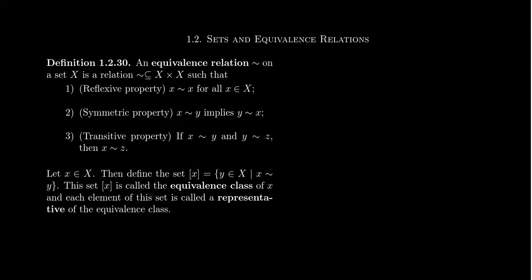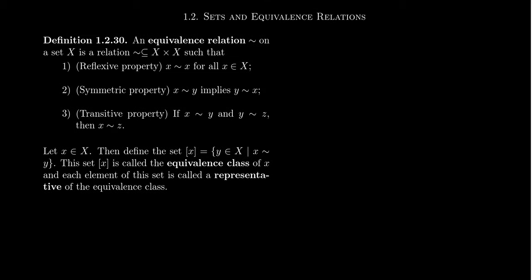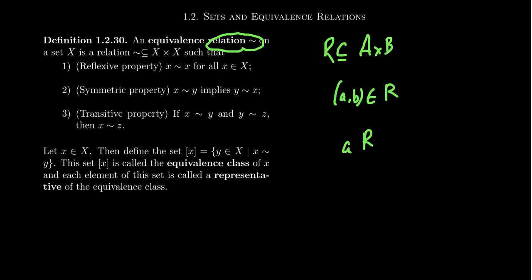We're going to talk about equivalence relationships in this lecture, presenting the definition and some examples. Remember before, we defined what a relationship is. Say we have two sets, like A and B. A relationship R was some subset of the direct product of those two sets. Whenever the element (A, B) is inside the relationship R, we say that A R B. Using R as your relationship symbol is kind of corny — typically we'll use a different symbol, like a tilde. We'll say A tilde B.